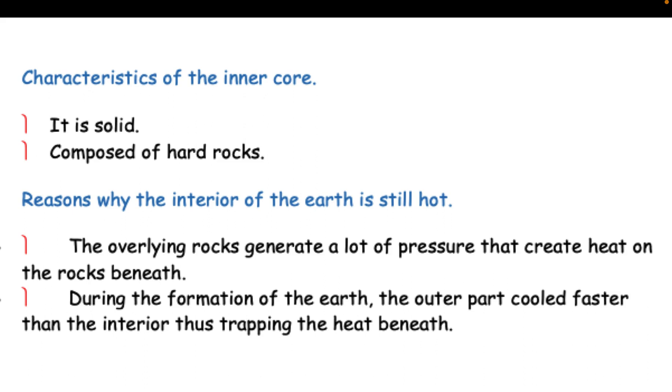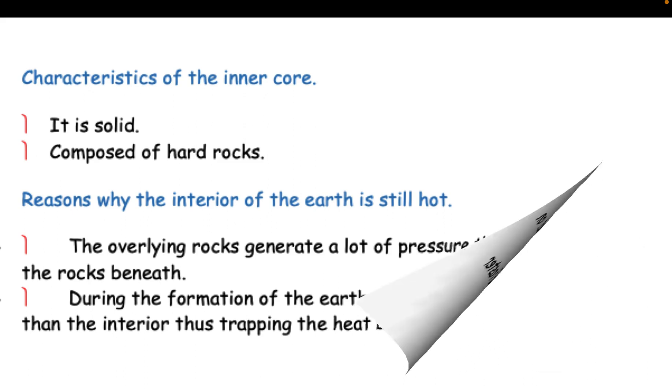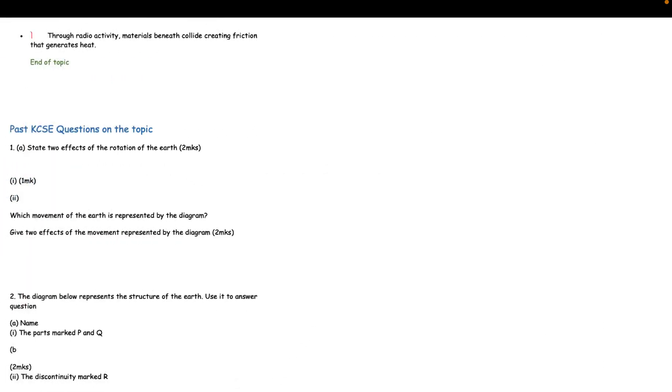Reasons why the interior of the earth is still hot: The overlying rocks generate a lot of pressure that creates heat on the rocks beneath. During the formation of the earth, the outer part cooled faster than the interior, thus trapping the heat beneath. Through radioactivity, materials beneath collide creating friction that generates heat. End of topic.